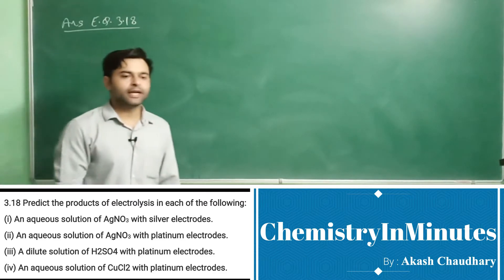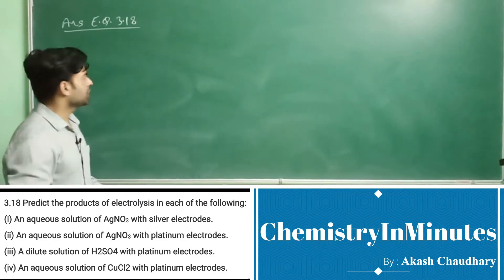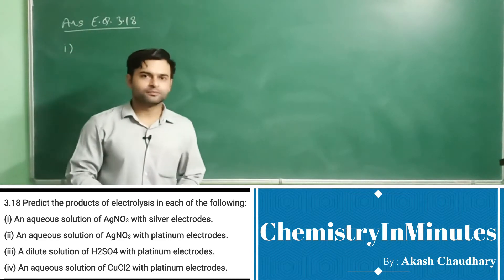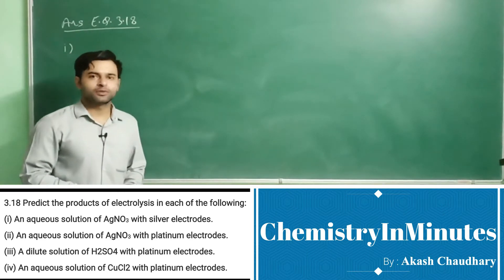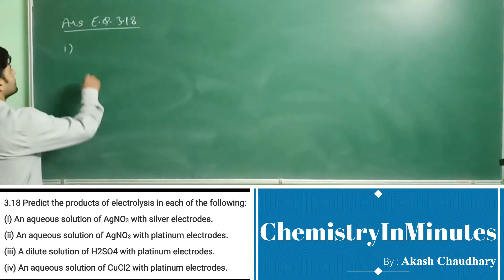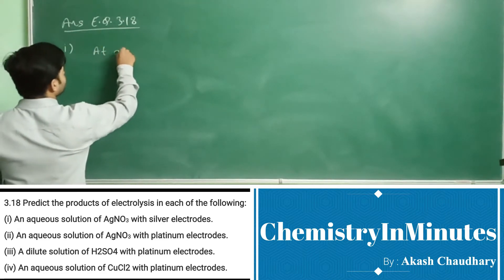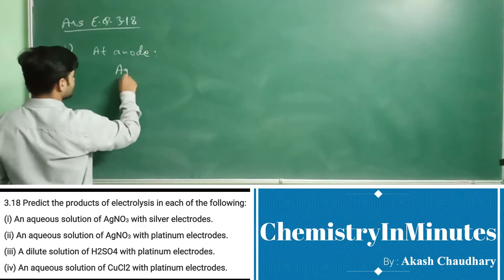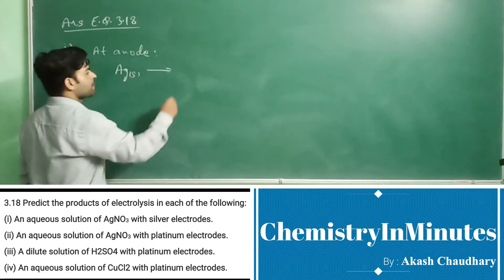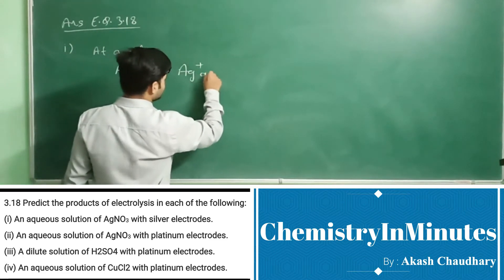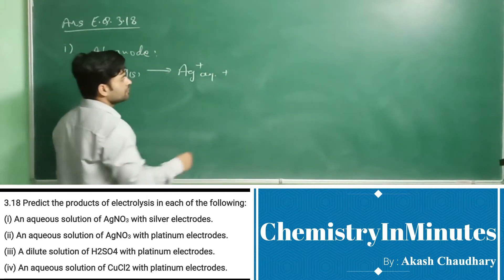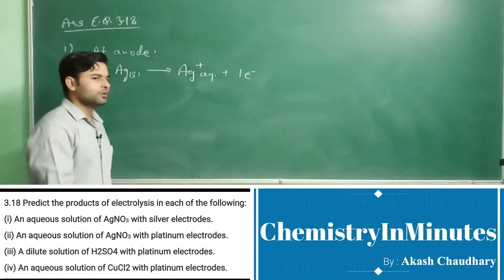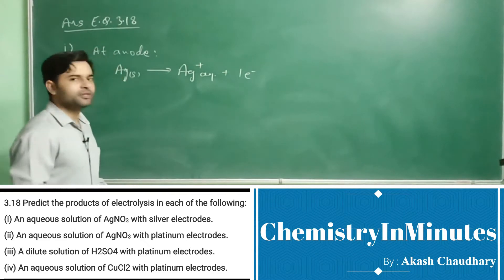First part: an aqueous solution of AgNO3 with silver electrodes. Here the electrodes are of silver and the solution is AgNO3, so the electrodes will participate in the reaction. At anode, oxidation of silver will take place: Ag(s) → Ag⁺(aq) + e⁻. So at anode, silver metal is being converted to silver ion.